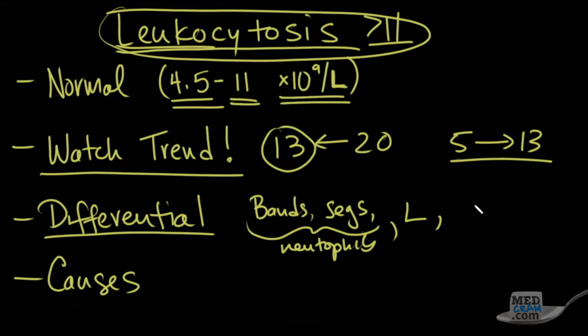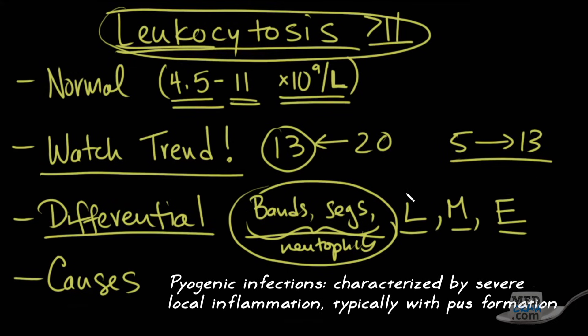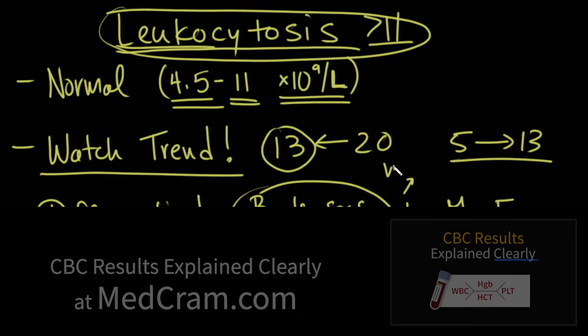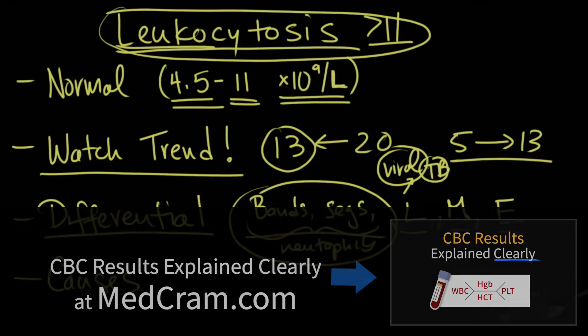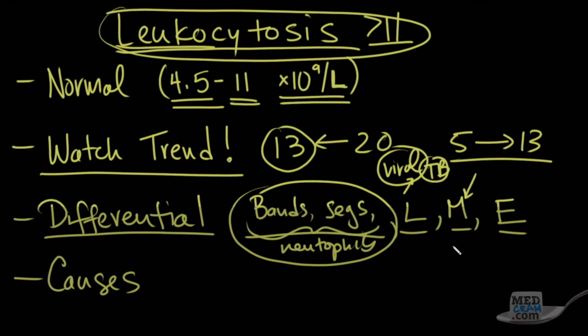But then you also have lymphocytes, monocytes, and eosinophils. They all have their own function. Typically, the bands and the neutrophils are seen elevated in pyogenic infections. Lymphocytes can also be elevated, but they're usually more typical for viral. You also may see this in tuberculosis. Same with monocytes.